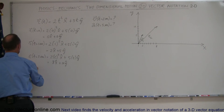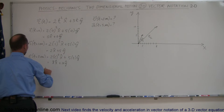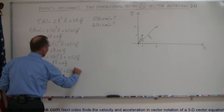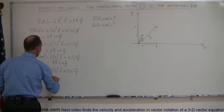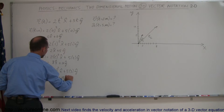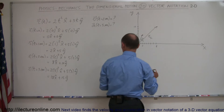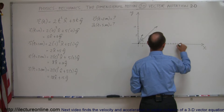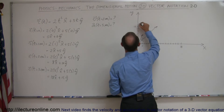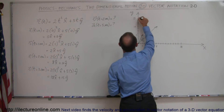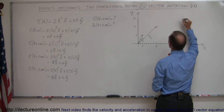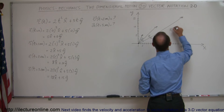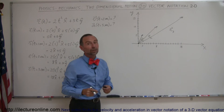Now let's find the position vector at t equals 3 seconds, which equals 2 times 3 squared in the x direction plus 5 times 3 in the y direction. That gives 18 in the x direction plus 15 in the y direction. We graph that point and draw the vector from the origin to it. This is r₃, representing the position of the object at t equals 3 seconds.